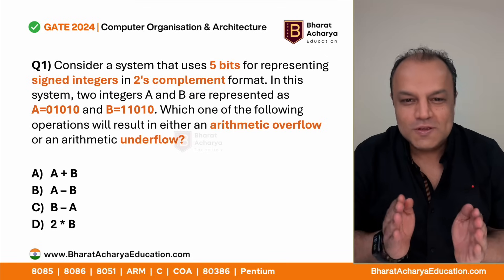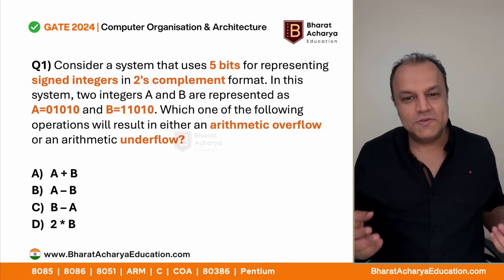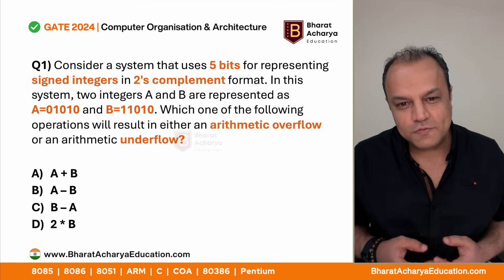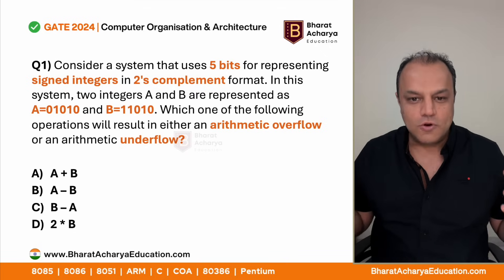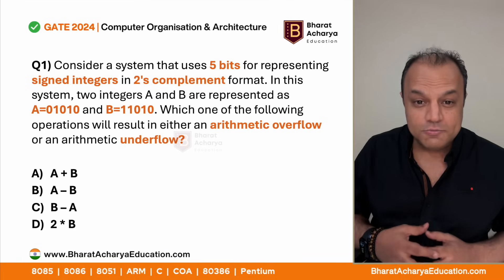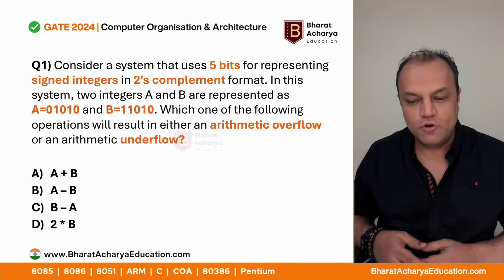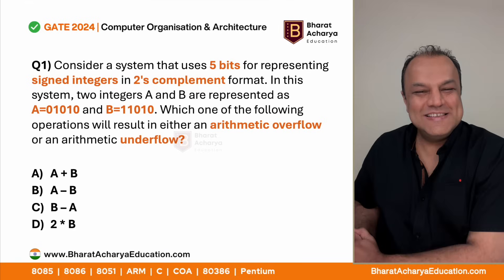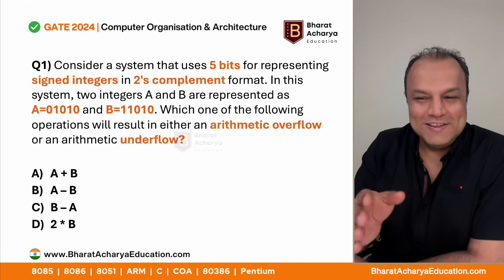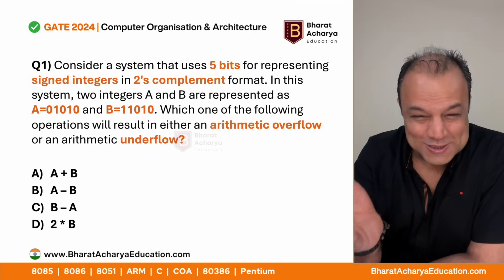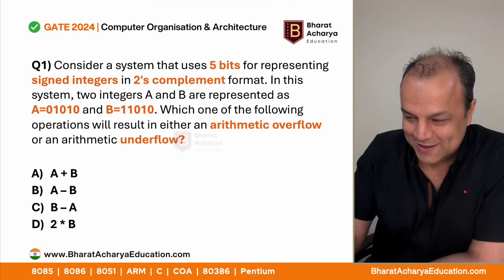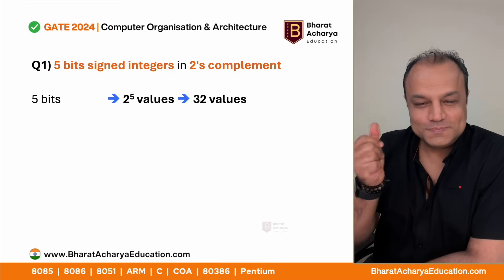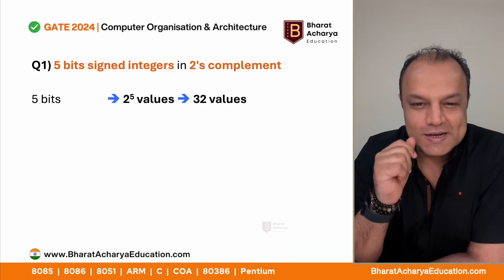The moment you cross the range of signed numbers you create an overflow. The ill effect of an overflow is that the sign of the number becomes wrong - that is why it is very important to check for overflow. Stop being scared, it's too easy. The first thing you need to understand is what is the meaning of a five-bit signed number.